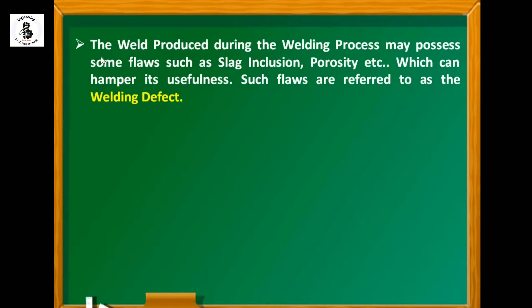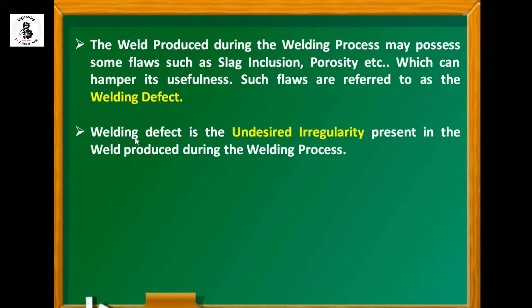Basically, the weld produced during the welding process may possess some flaws such as slag inclusions, porosity, etc., which can hamper its usefulness. Such flaws are referred to as welding defects. Welding defects are undesired irregularities present in the weld produced during a welding process.